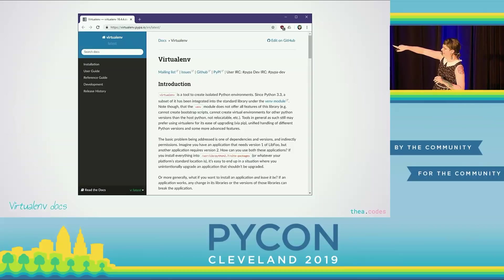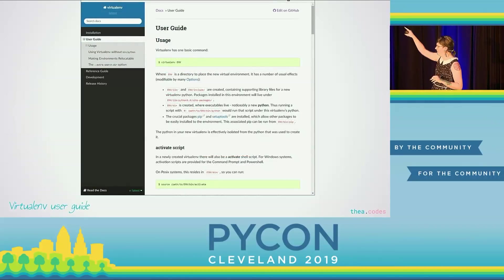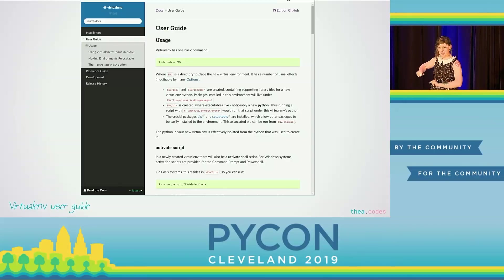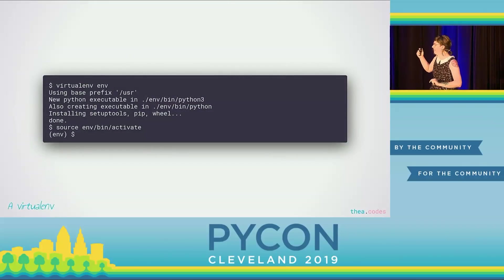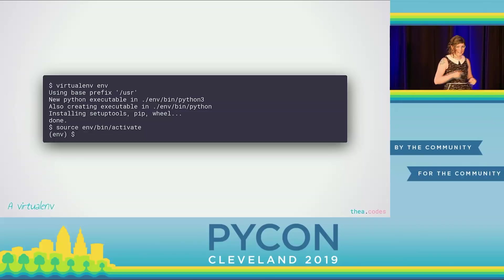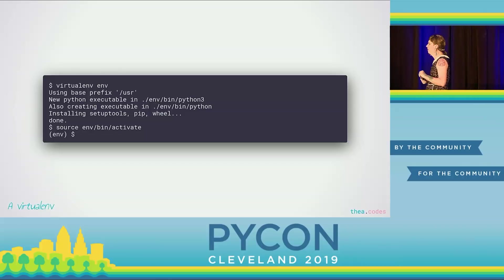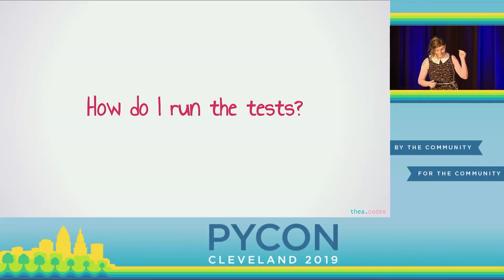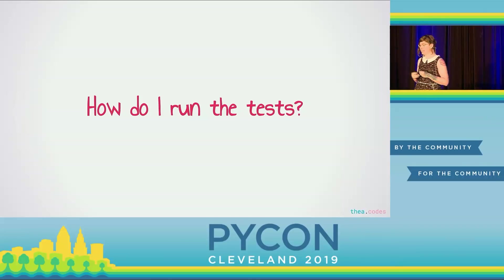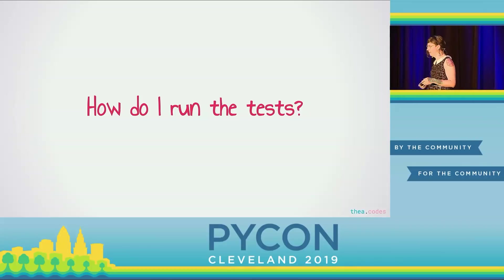This is the top Google result for virtual environment, and it's really dense — there aren't any commands here. This is wonderfully useful if you want to know what virtualenv does under the covers, but completely useless if you want to know how to use it. Thankfully there's a user's guide on the left side that has the two commands we need. So I've made a virtual environment and activated it — it's actually two steps. Step zero has part A and B. Now what were we doing? Oh, we were running the tests. Let's run the tests. But how do I run the tests again?